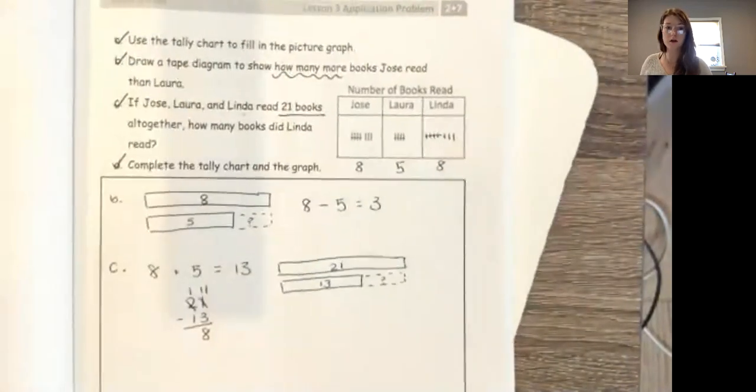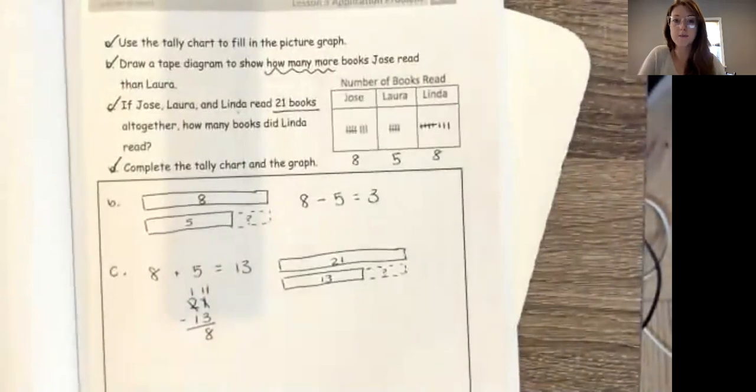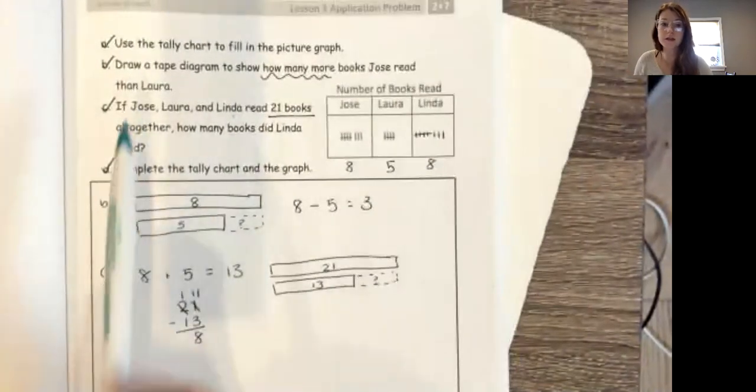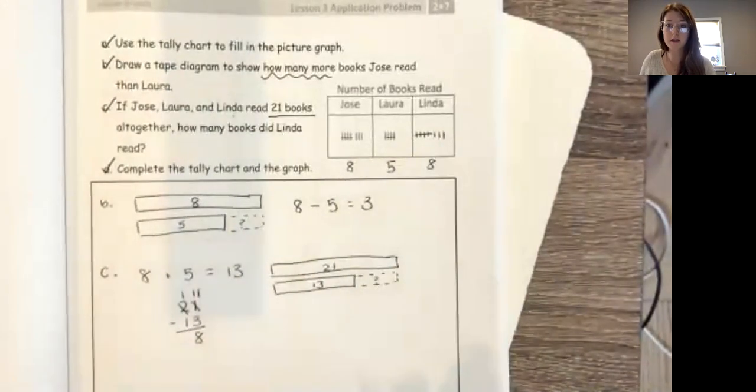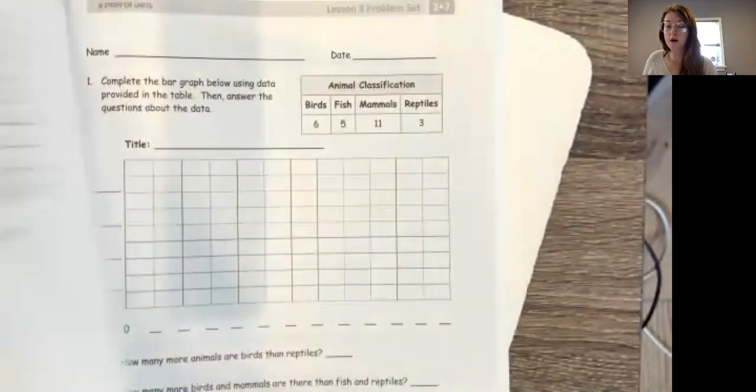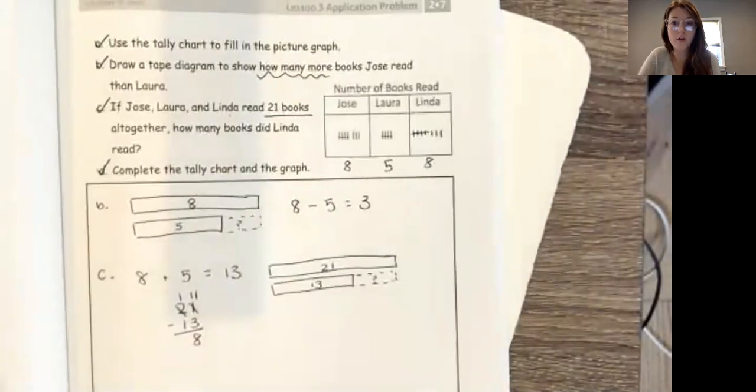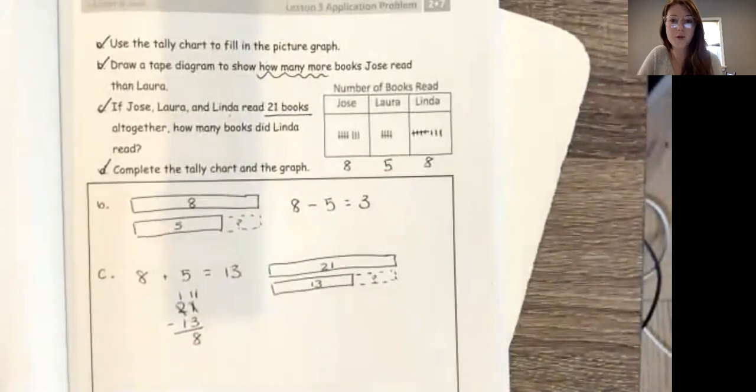So I did all four parts of my problem for today. Make sure that you did each of these steps. There were a few steps to this problem. Remember that you have to make sure that you fill in your tally chart and your graph on the back. If you did all those things, great job. You can give yourself a little check or star at the top and you are all done. Great job.